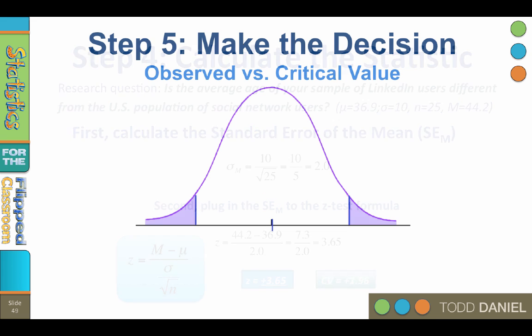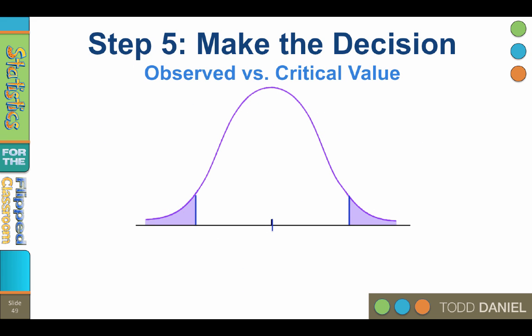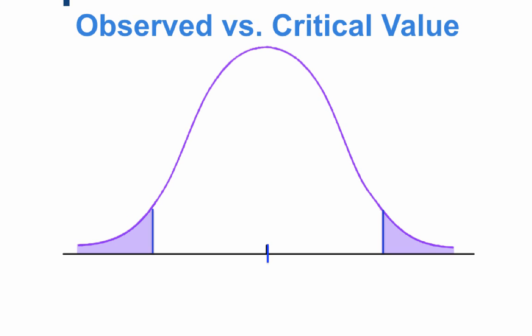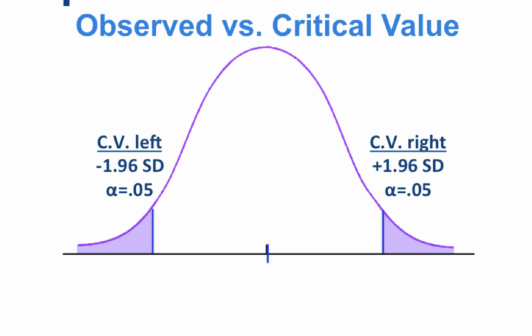So we are ready for step 5, make the decision. Here we have our normal distribution. We have set two fences for our two-tailed test, one at positive 1.96 and the other at negative 1.96. This contains 95% of the scores inside of the fences and 5% of the scores split between the two tails.